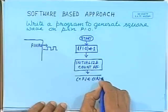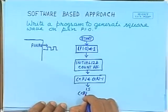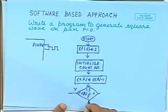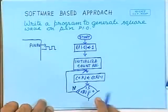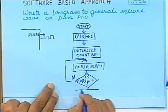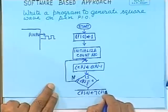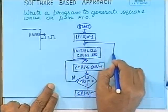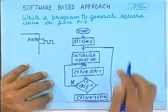Whenever the count reaches 0, we complement the bit P1.0 and go back to the initialization point. This can be realized with instructions: set B P1.0, then move R6 with a value — say 255 decimal. The DJNZ R6 instruction decrements the counter and loops back. Once this is over, CPL complements P1.0, then SJMP loop jumps back. The frequency can be decided by the initial count value.